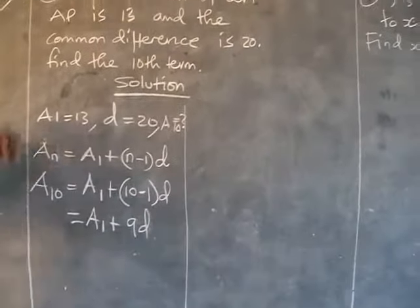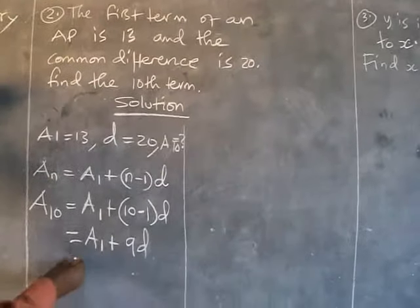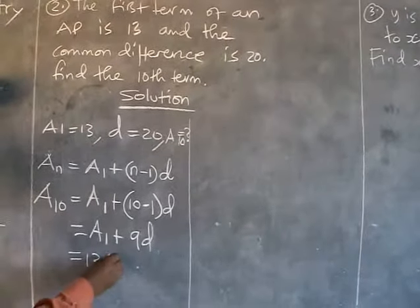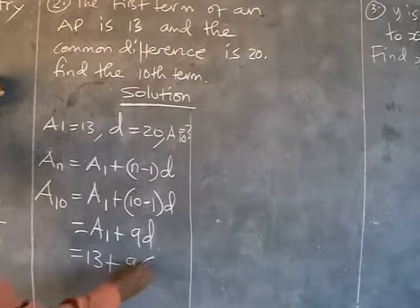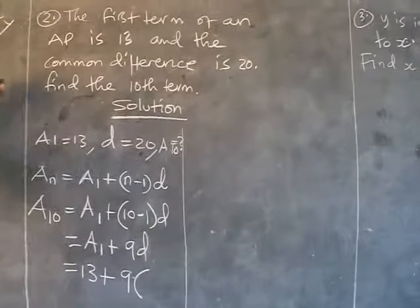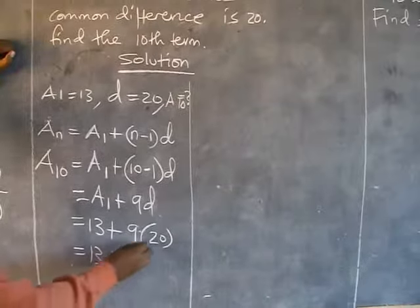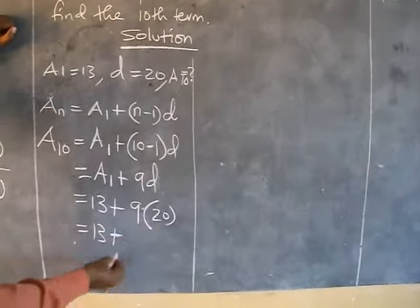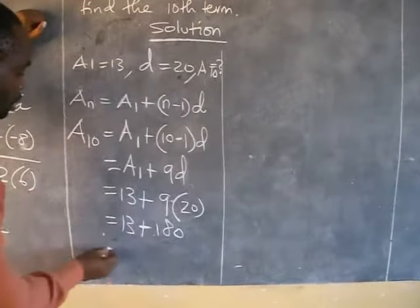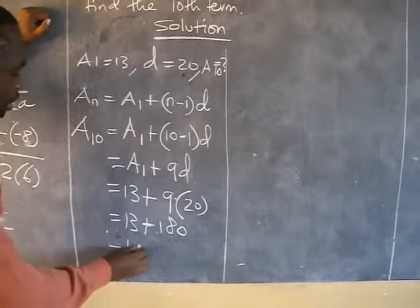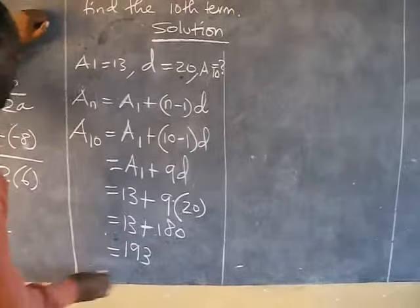And in the question we have been given A1 as 13, therefore equals to 13. We add 9 times common difference which is 20. Therefore it will be 13 plus 9 times 20 which we get is 180. When you add these two values together you get 193.